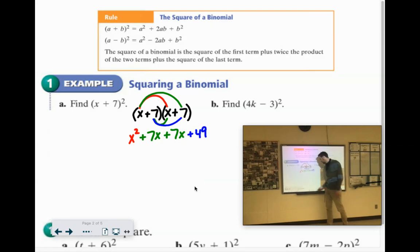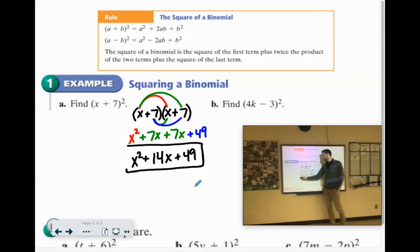So if we combine our like terms, we would end up with X squared plus 14X plus 49. And that is the correct answer.